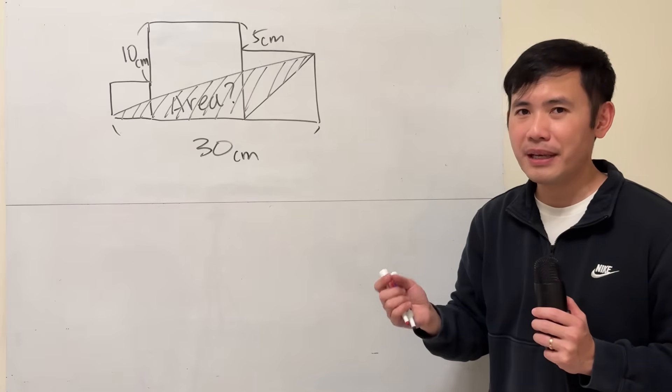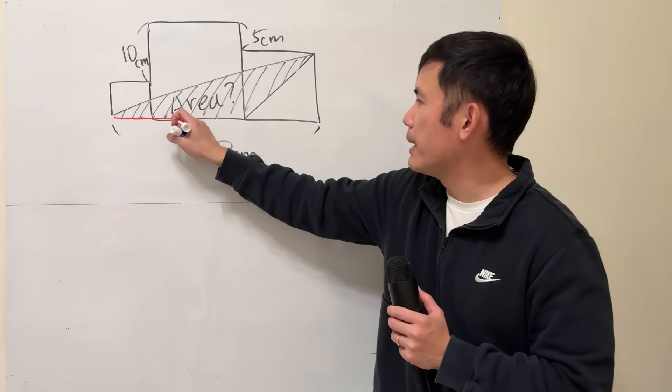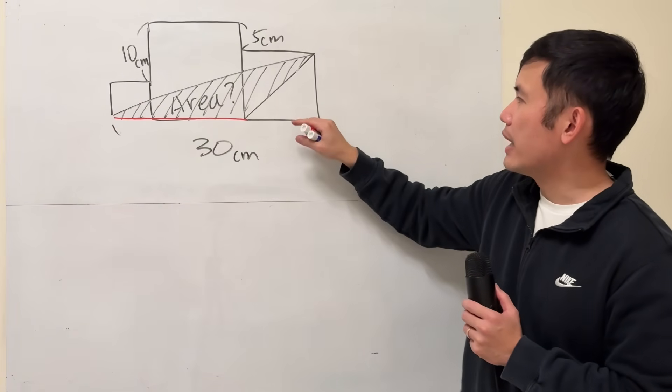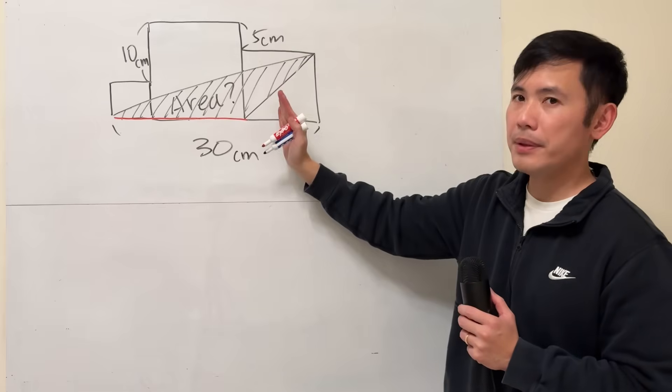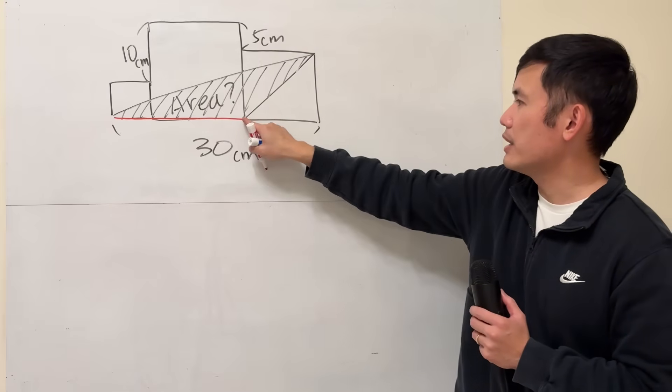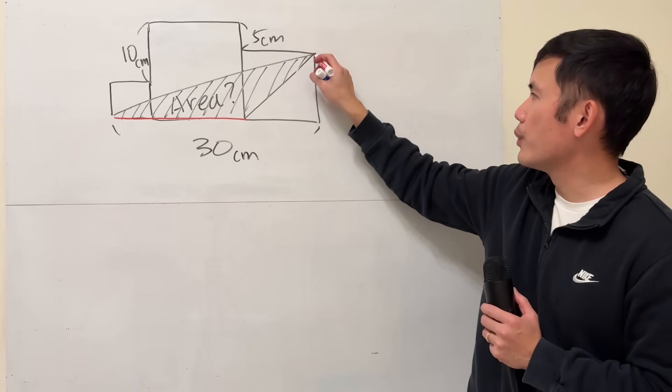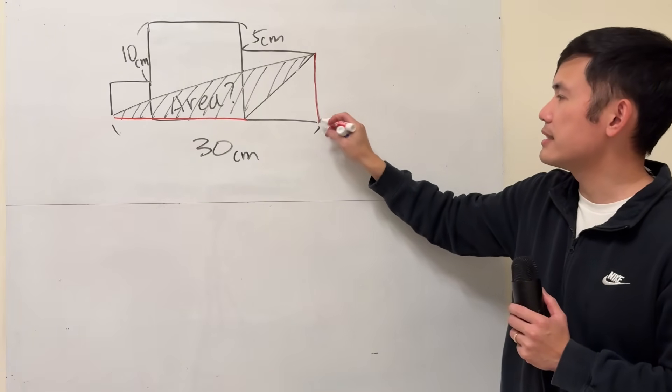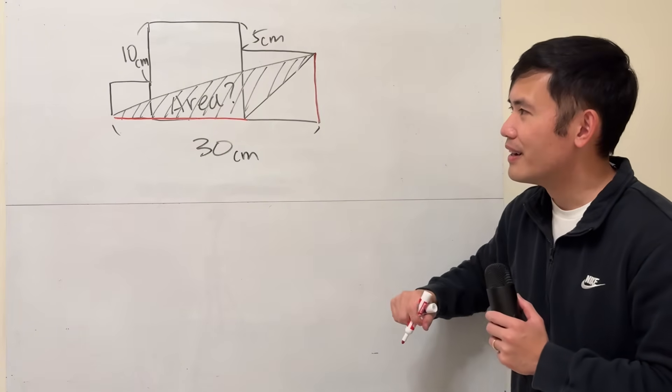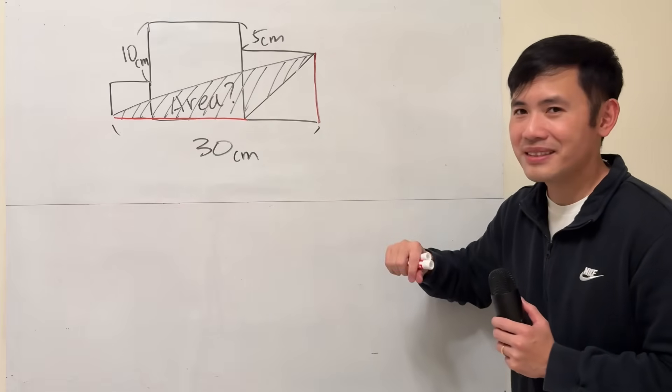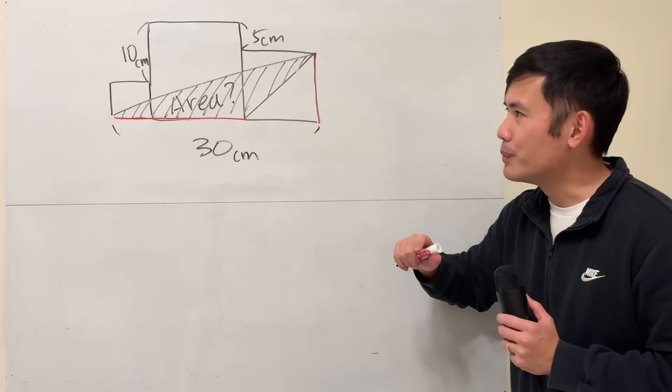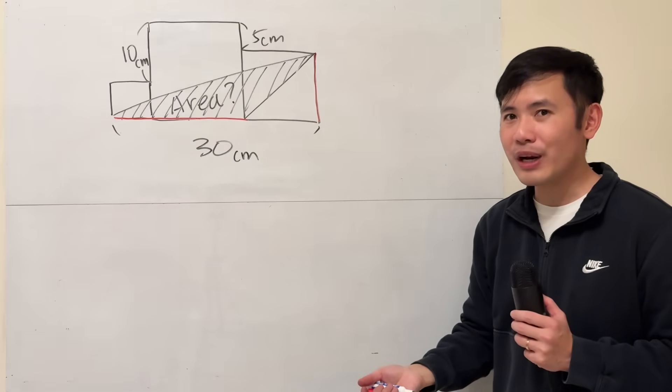If we take this to be the base of the triangle then the height will be, well you have to draw a perpendicular, so this right here will be the height. You can extend it and because it's a square this is 90 degrees. If we can find out this and that we're done, but how? We must utilize 10 and 5 somehow right.